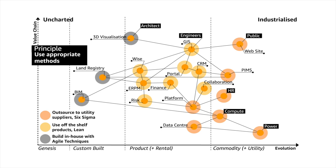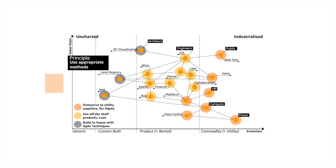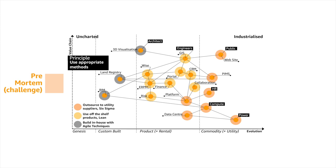The use of appropriate methods is a pattern. These patterns come from the fact that we use maps pre-mortem and post-mortem. Before we start something, we create a map and challenge what we're going to do — that's the pre-mortem part. Then we go build it, and afterwards we use the map to look at what happened — that's the post-mortem learning. And it's through that post-mortem learning that we discover patterns.